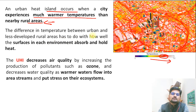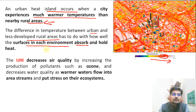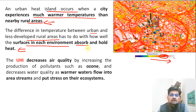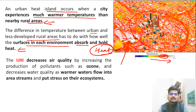The difference in temperature between urban and less developed rural areas has to do with the surfaces present. Surfaces in each environment absorb and hold heat differently — remember the concept of albedo, which is about reflection. Albedo of different surfaces varies: concrete structures have different albedo, soil has different albedo, sand has different albedo. Accordingly, heat absorption and the release of long-wave radiation after reflection differs across areas.